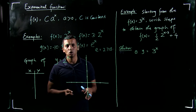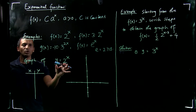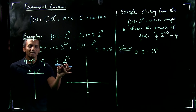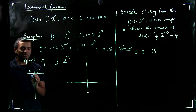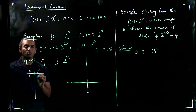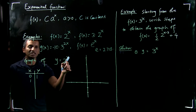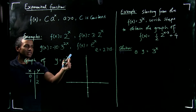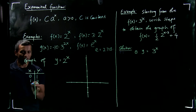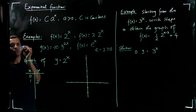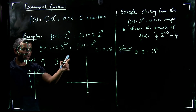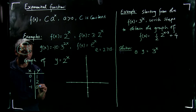Now let's see how the graph of an exponential function looks. Take y equals 2 to the x. To draw the graph from scratch, make a chart with different values of x and compute y. When x equals 0, y equals 2 to the 0, which is 1. When x equals 1, y equals 2. When x equals negative 1, y equals 2 to the negative 1, which is one half, or 0.5.